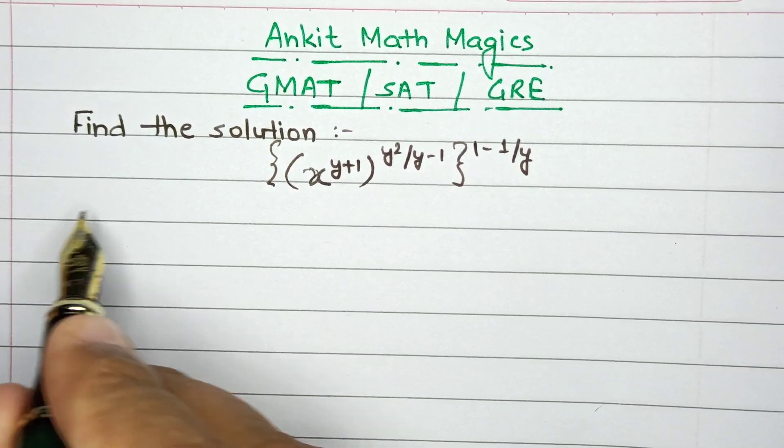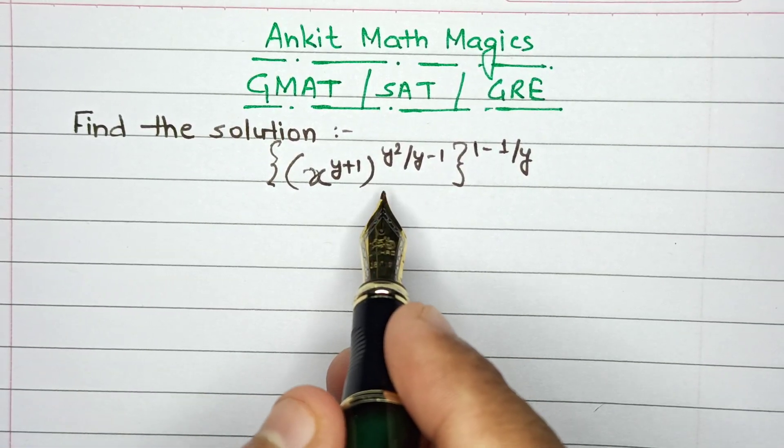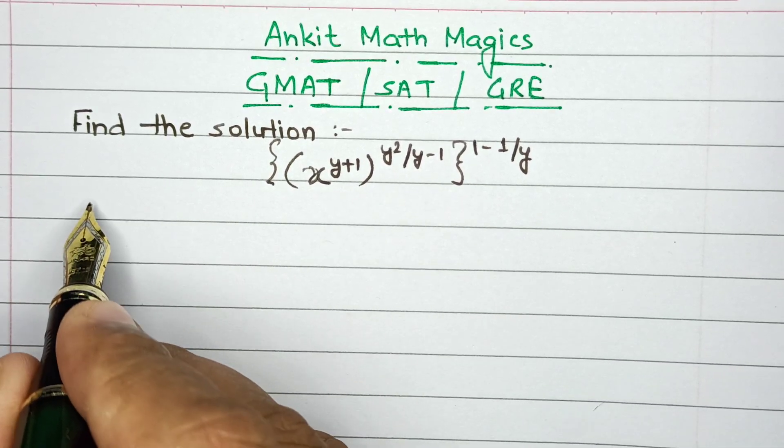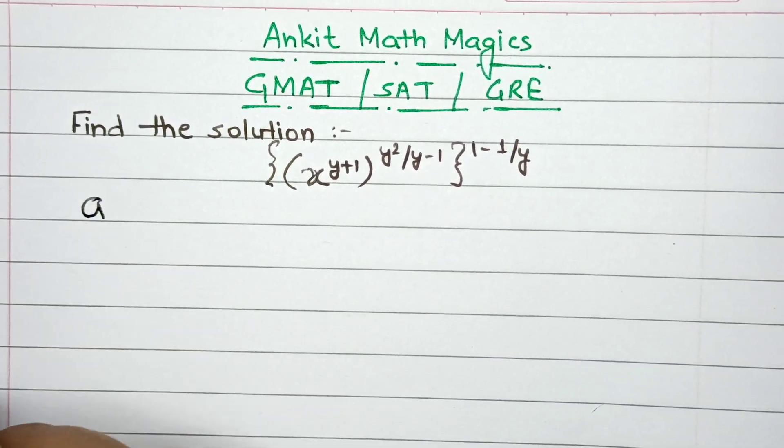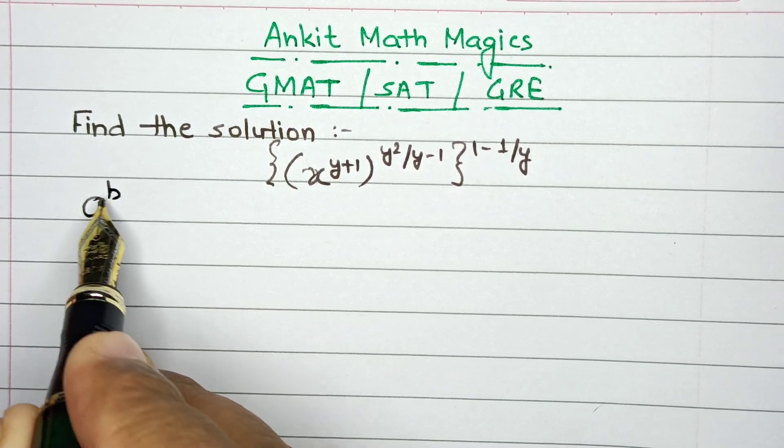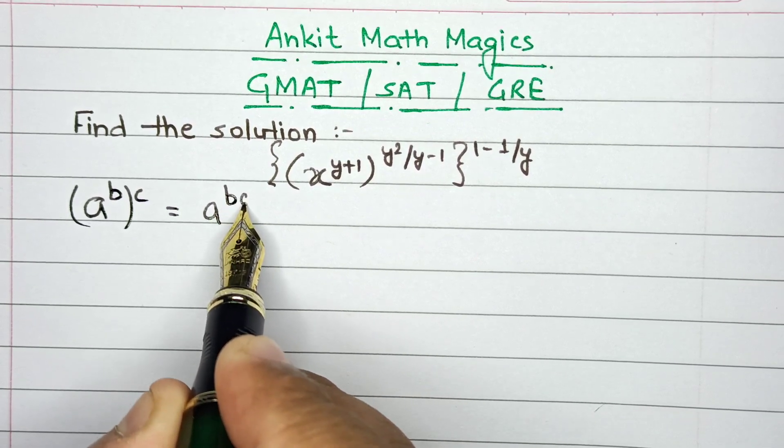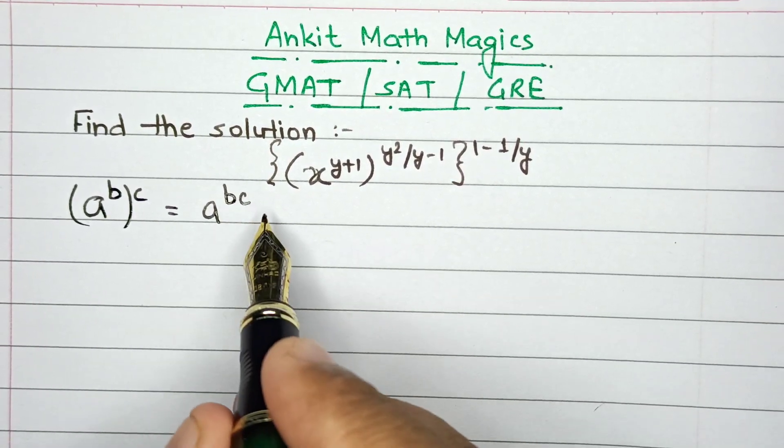Let's start the solution, but first, let's discuss the properties that will be used in this kind of problem. For example, if I write (a^b)^c, this can be written as a^(b×c).